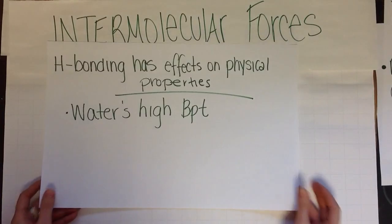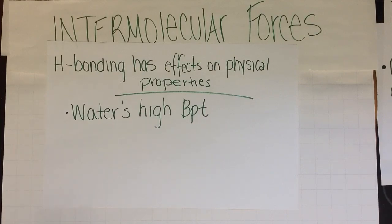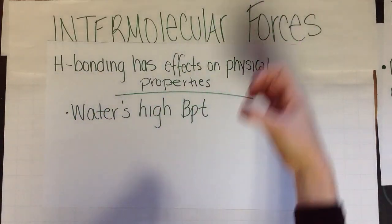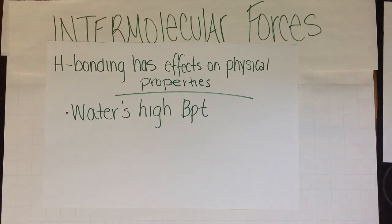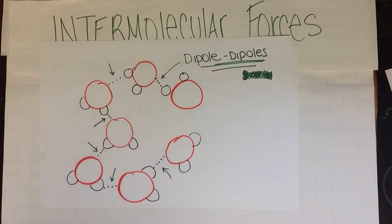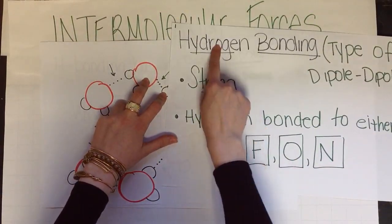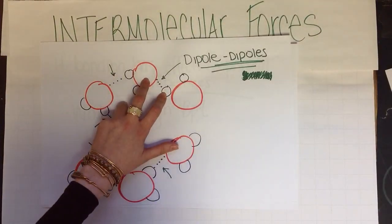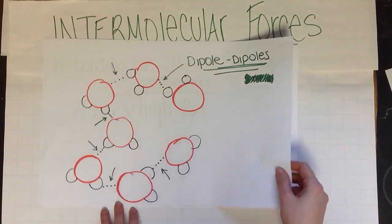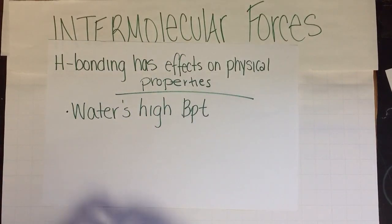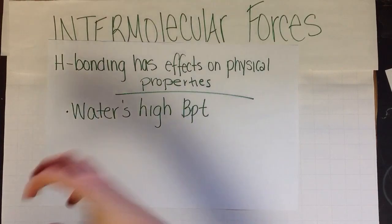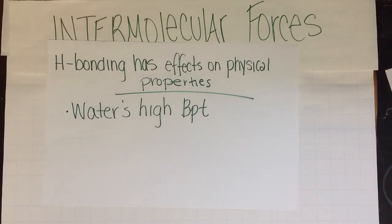Because hydrogen bonding is strong, it has effects on physical properties. For example, boiling points tend to be high. In order for water to boil, the molecules have to break apart. Water bonded to water is an example of hydrogen bonding — hydrogen is bonding with oxygen. These are all very strong. You need a lot of energy: if you remember, it takes 100 degrees Celsius to boil water, meaning a lot of energy has to be pumped in to get that intermolecular force — the hydrogen bond — to break. So water has a very high boiling point.